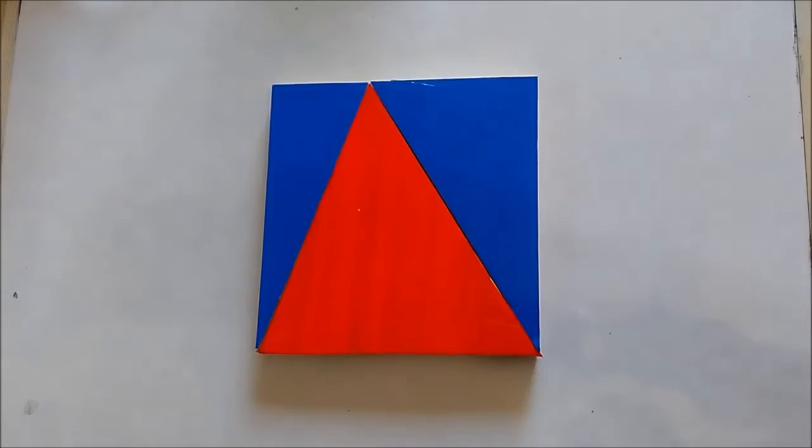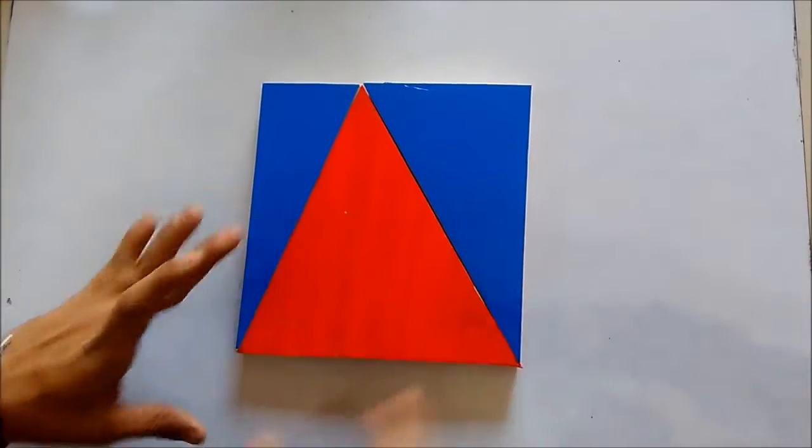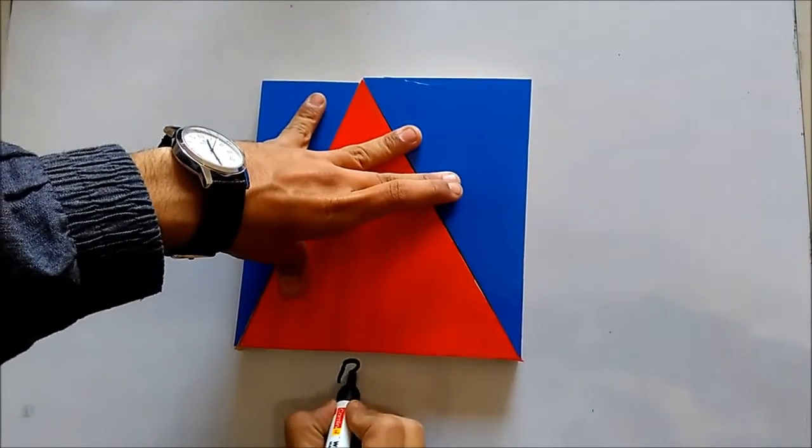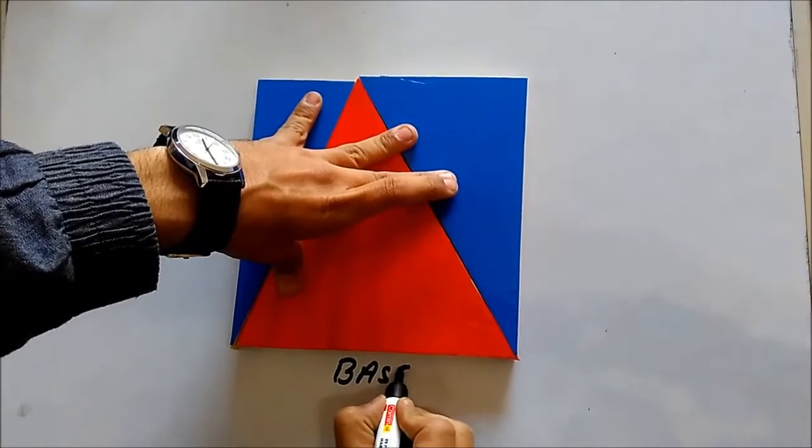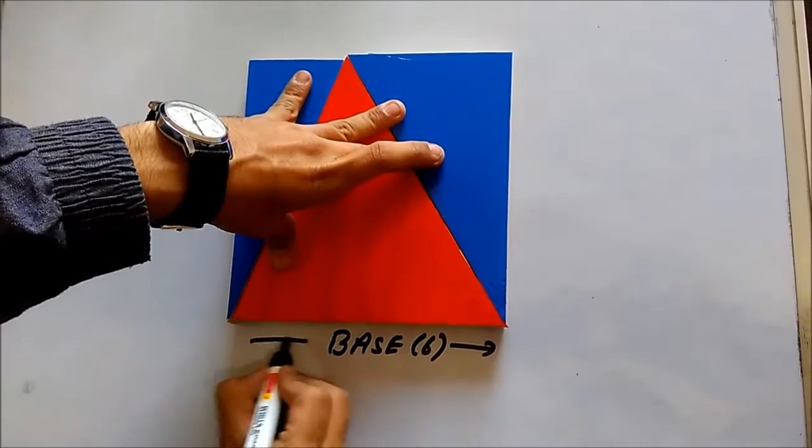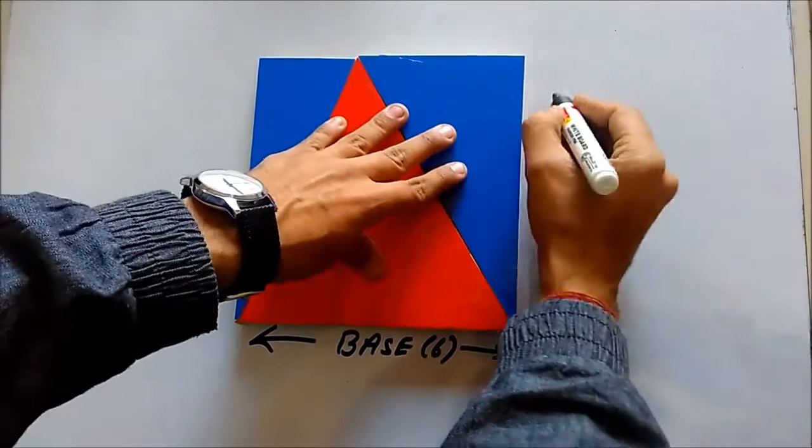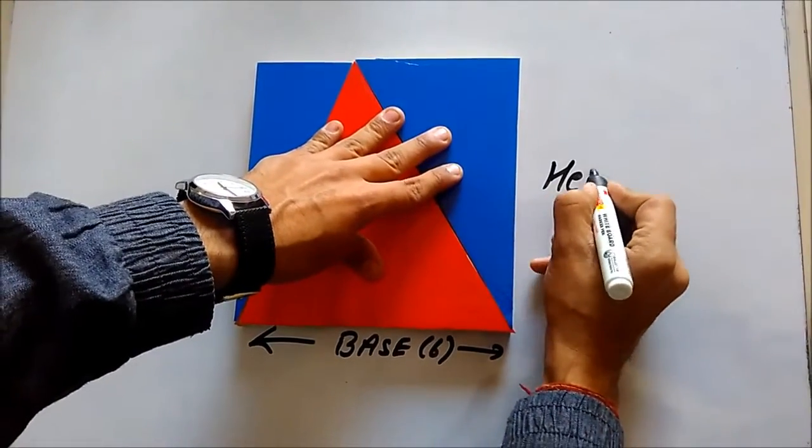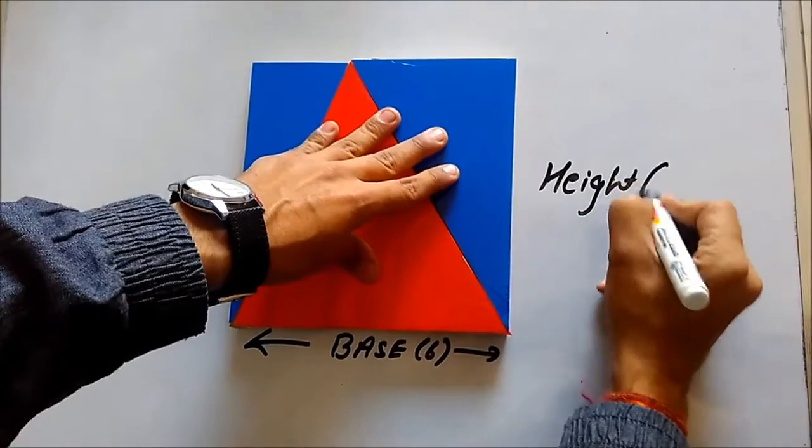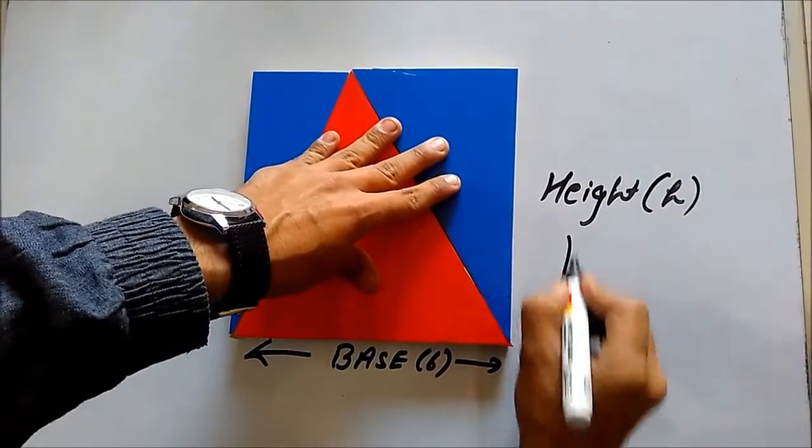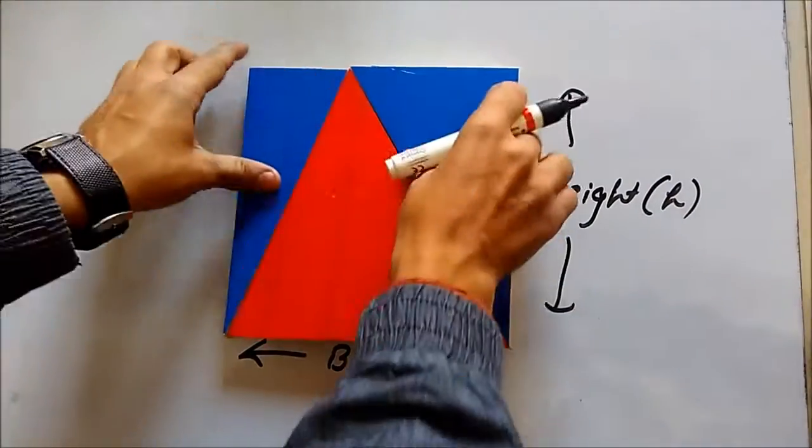Now what we know is this is the base, or we can say B, of this red triangle, and this is the height, or H, the height of this red triangle.